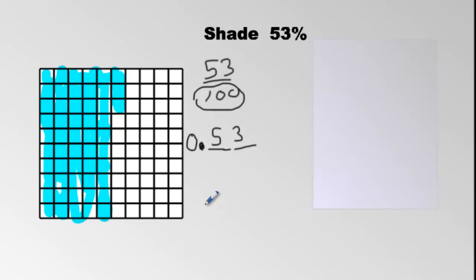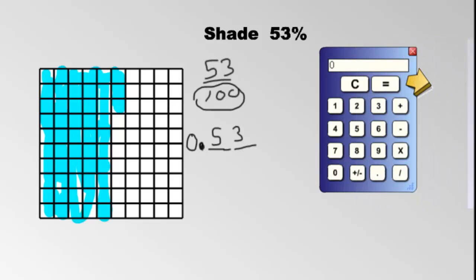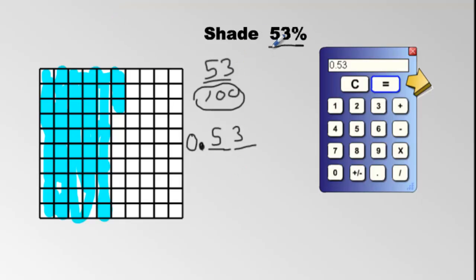We can put a zero there to make it 0.53. And if we had a calculator, we could divide 53 by 100, push equals, and get 0.53 — it's the same thing, but this is faster. You don't need a calculator for every question. The percentage is 53%, the fraction is 53/100, and the decimal is 0.53 — they all mean the same thing.